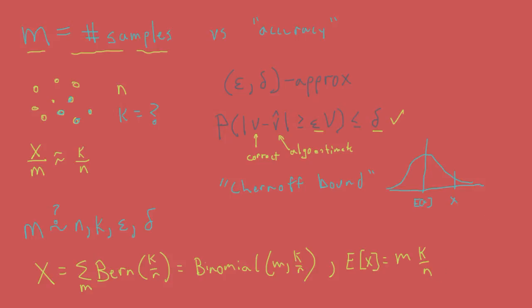The particular form of the Chernoff bound that we're using states that the probability that a binomial random variable deviates in absolute terms from its expected value by an amount greater than epsilon times the expected value is exponentially small.